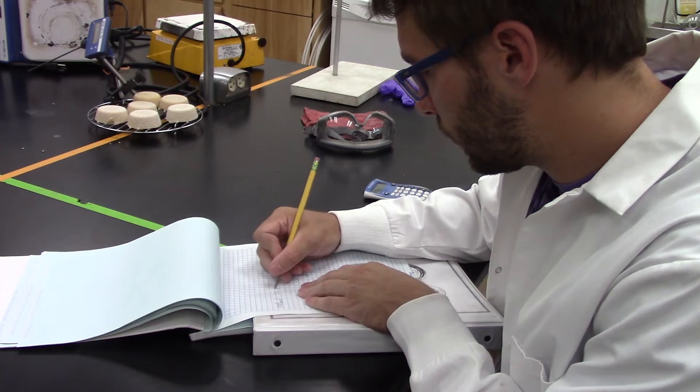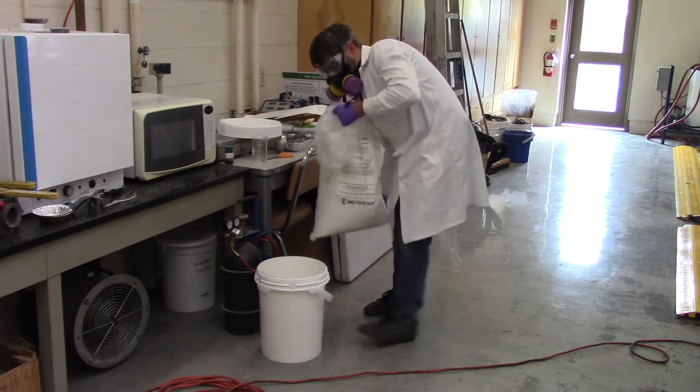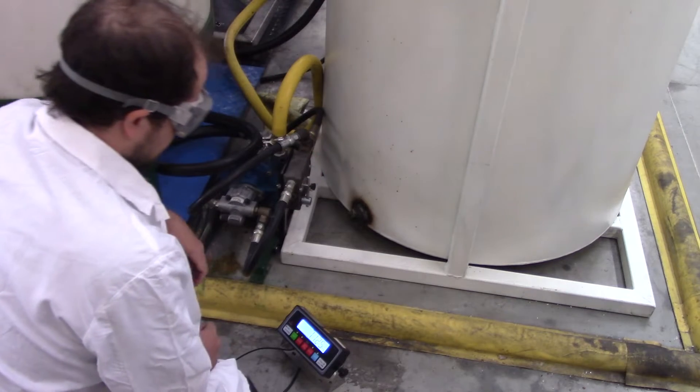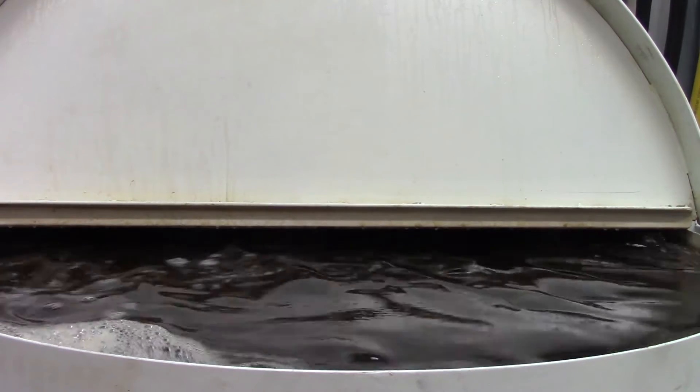Our program uses a two-step transesterification process in order to make as much biodiesel as possible. We run the first reaction with 80% of our alcohol catalyst mixture and the second with the remaining 20%. We begin by drying the oil and then preheating it in the mixing tank.